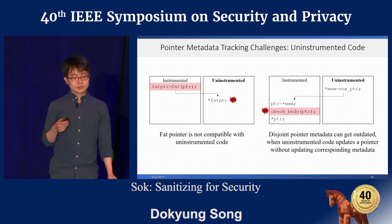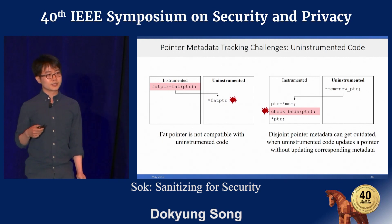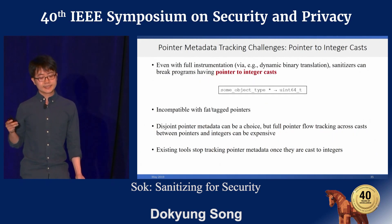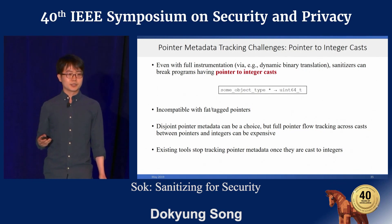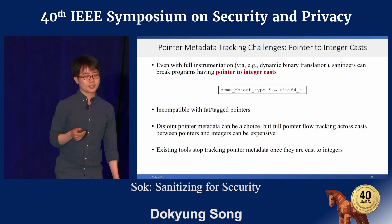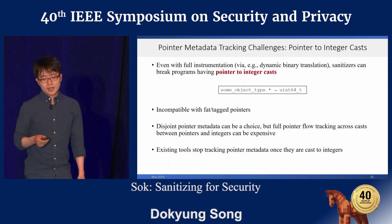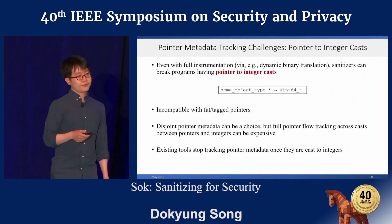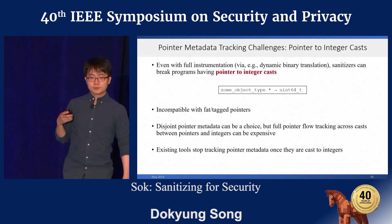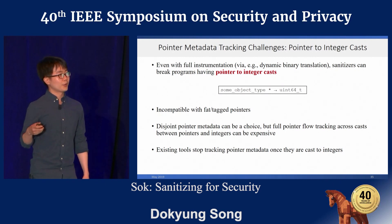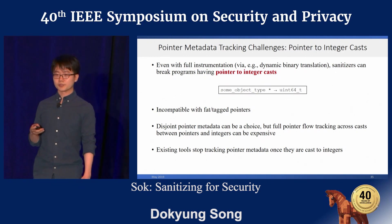Full instrumentation is also an option, but it's often not viable due to things like binary-only libraries. Even with full instrumentation using dynamic binary translation, sanitizers can still fail to keep track of pointer metadata. For example, C supports pointer-to-integer casts, which is incompatible with fat and tagged pointers. Disjoint metadata can also be an option here, but pointer flow tracking across pointer-integer casts remains an open problem. To our knowledge, no existing tools address this problem.